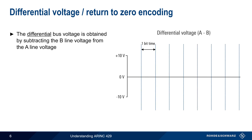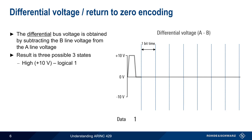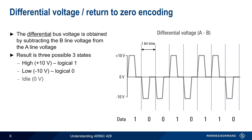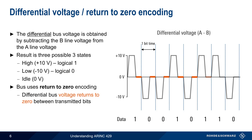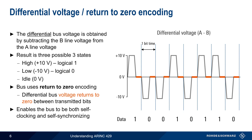The differential bus voltage is obtained by subtracting the B-line voltage from the A-line voltage. This results in three possible states: a high voltage of approximately plus 10 volts representing a logical 1, a low voltage of approximately minus 10 volts representing a logical 0, and an idle state in which the differential voltage is approximately 0. The reason for this 0 voltage is that the ARINC 429 bus uses return-to-zero encoding, meaning the differential bus voltage always returns to 0 between transmitted bits. Return-to-zero encoding has the advantage of enabling the bus to be both self-clocking and self-synchronizing, eliminating the need for a separate clock line or synchronization bit sequence at the beginning of each transmission.